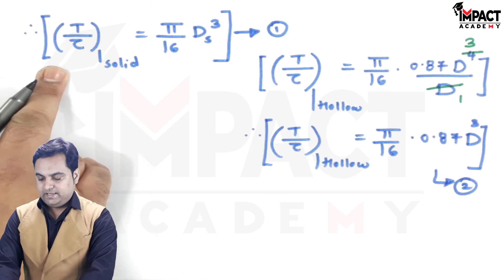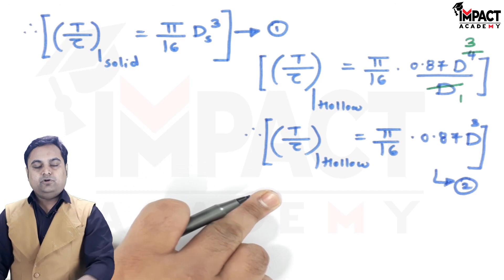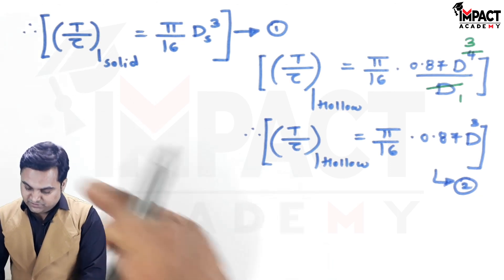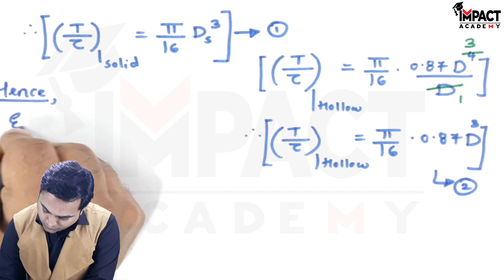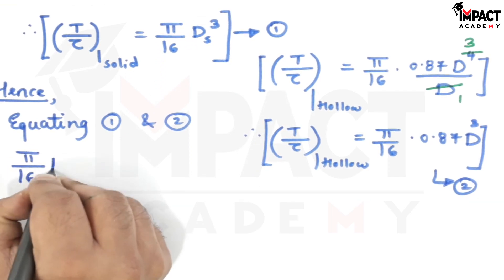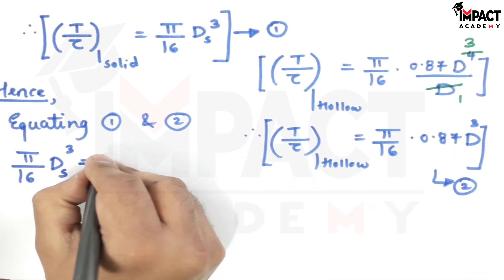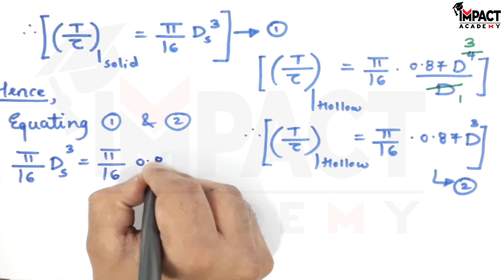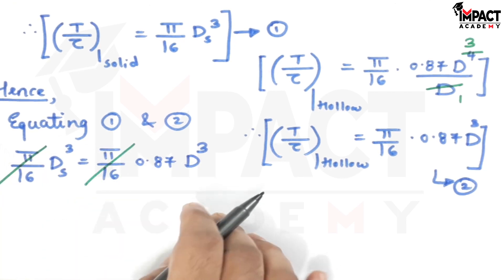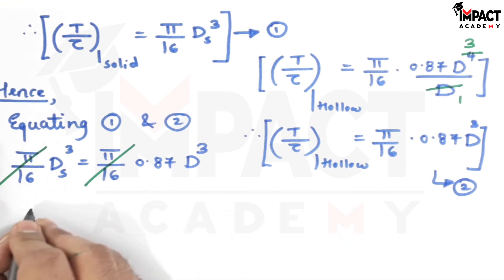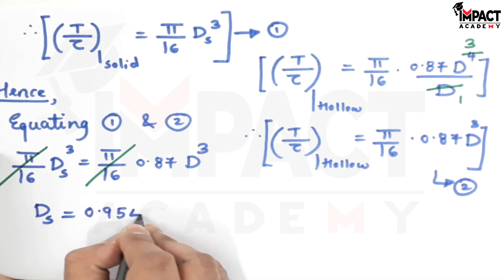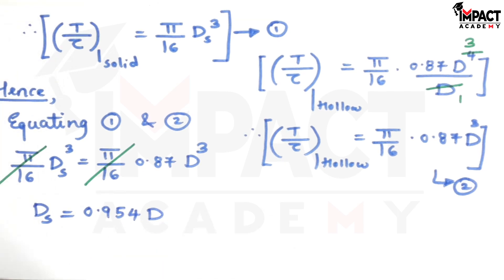Since torque and shear stress are both the same, equations one and two are equal. Equating them: π/16 × Ds³ = π/16 × 0.87 × D³. The π/16 cancels from both sides. Taking the cube root throughout, Ds = 0.954 × D — meaning the solid shaft diameter is slightly less than the outer diameter of the hollow shaft.